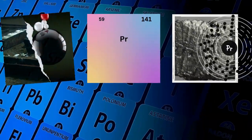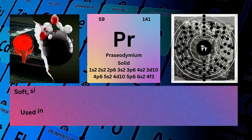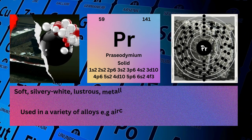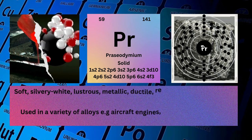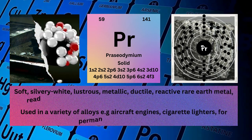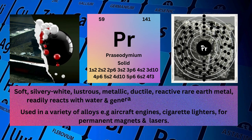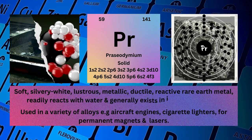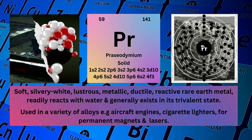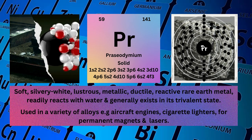Praseodymium. Atomic number: 59. Mass number: 141. Symbol: Pr. State: Solid.